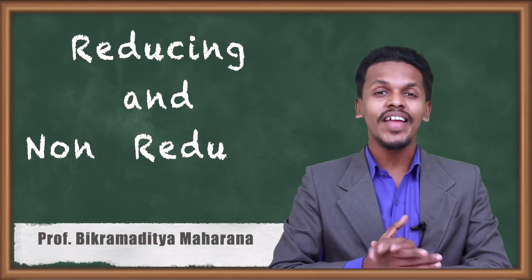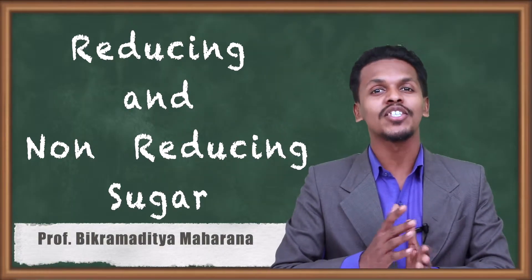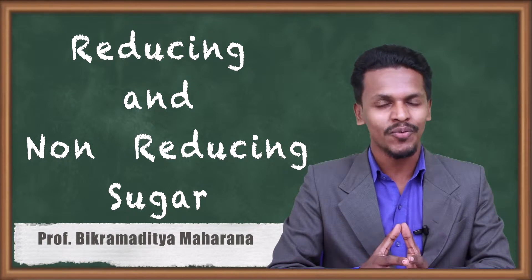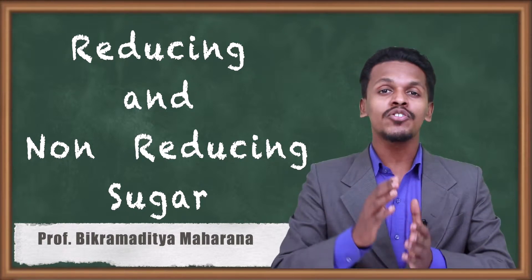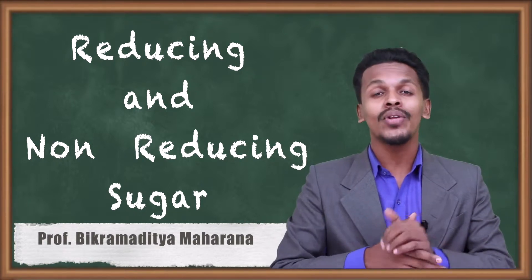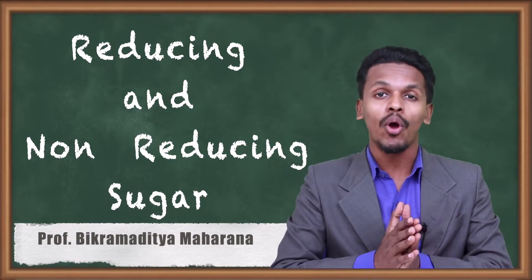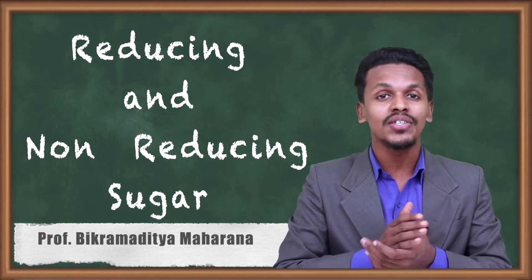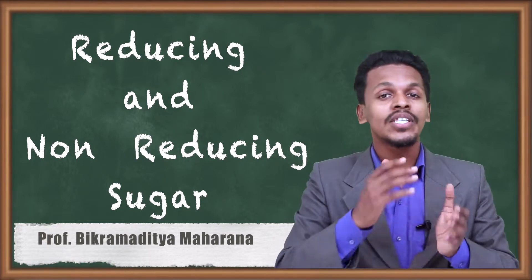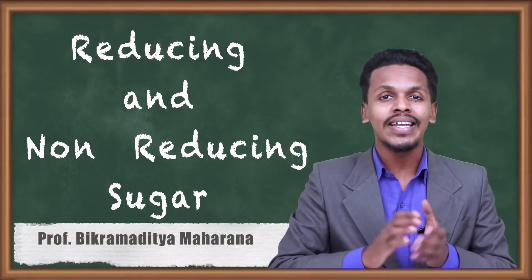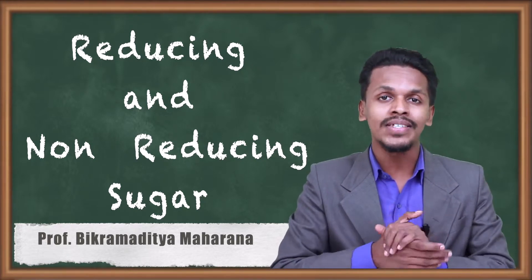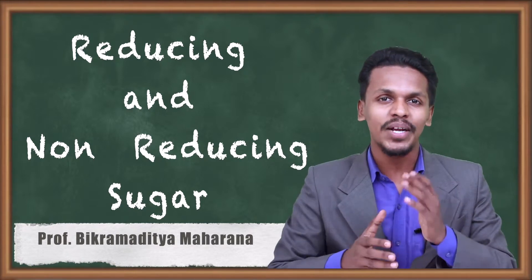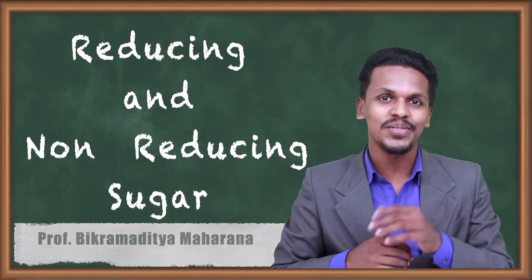in the previous topic we discussed the classification of carbohydrates on the basis of solubility in water. Now in this topic we are going to talk about the classification of carbohydrates on the basis of reducing nature — that is, reducing sugars and non-reducing sugars. Let me talk about that in this topic.